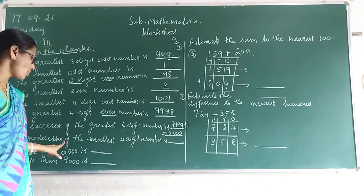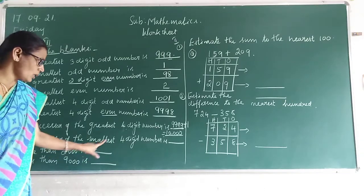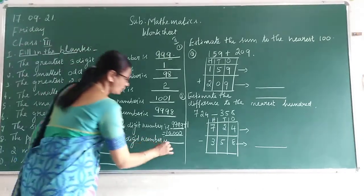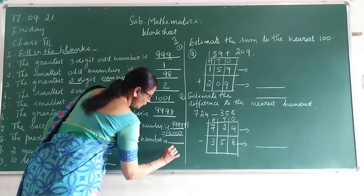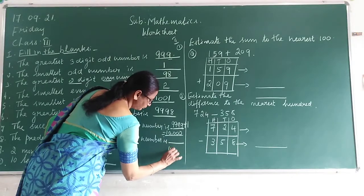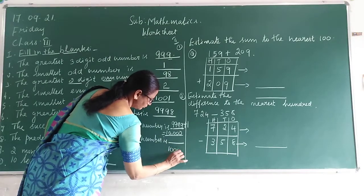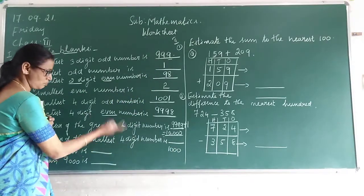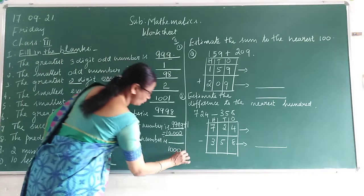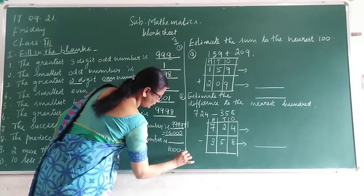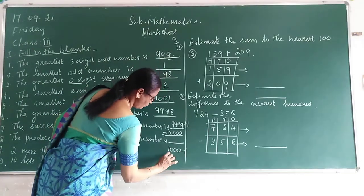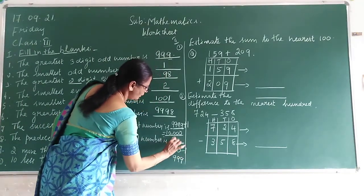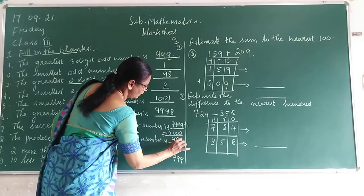The predecessor of the smallest 4-digit number. What is the smallest 4-digit number, children? 1000. The predecessor means you subtract 1. So 1000 minus 1 is 999.